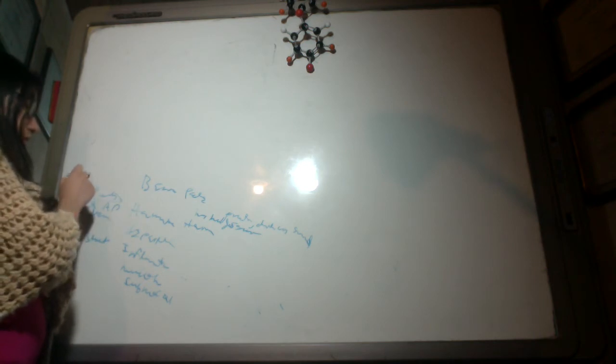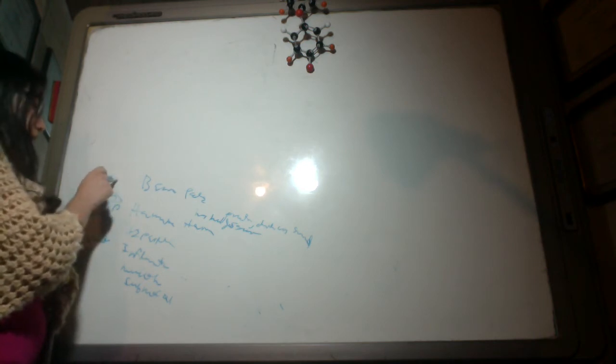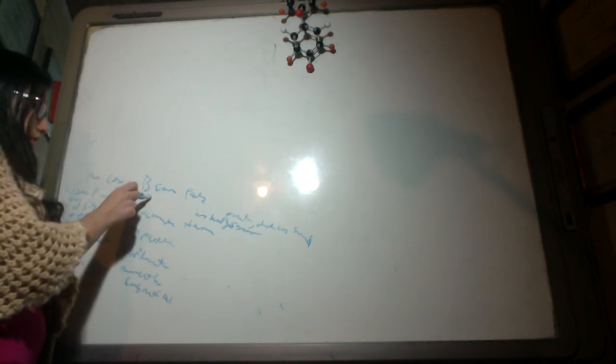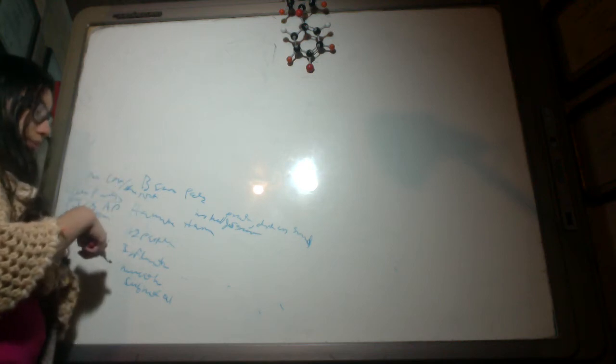In juvenile polyposis there would be an increased risk also of having a lot of hamartomatous polyps. The juvenile polyposis would see also polyps not only on the colon but also on the small intestine. So these are the hamartomatous polyps.